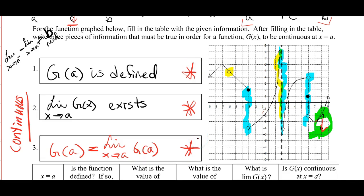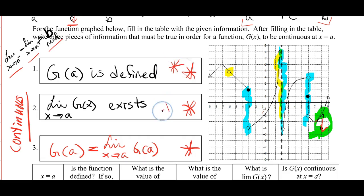These three parts are things you need to know and have memorized. Just like if you're asked how do you know if a limit exists — the left limit must equal the right limit and they must equal a real number — similarly you need to know: to determine if a function is continuous, the function must be defined, the limit at that value must exist, and the function must equal the limit.